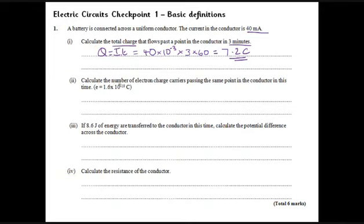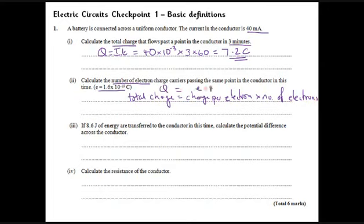This one's a bit trickier. We want to calculate the number of electrons that pass the point in this conductor in this time. We've got 7.2 coulombs of charge - how many electrons was that? Here's our crucial piece of information, on the data sheet as well: the charge on one electron is 1.6 × 10^-19 coulombs. The easiest way to think about this is that the total charge will be the charge per electron times the number of electrons. If I write that as Q = e × n, that equation looks fairly easy to understand.